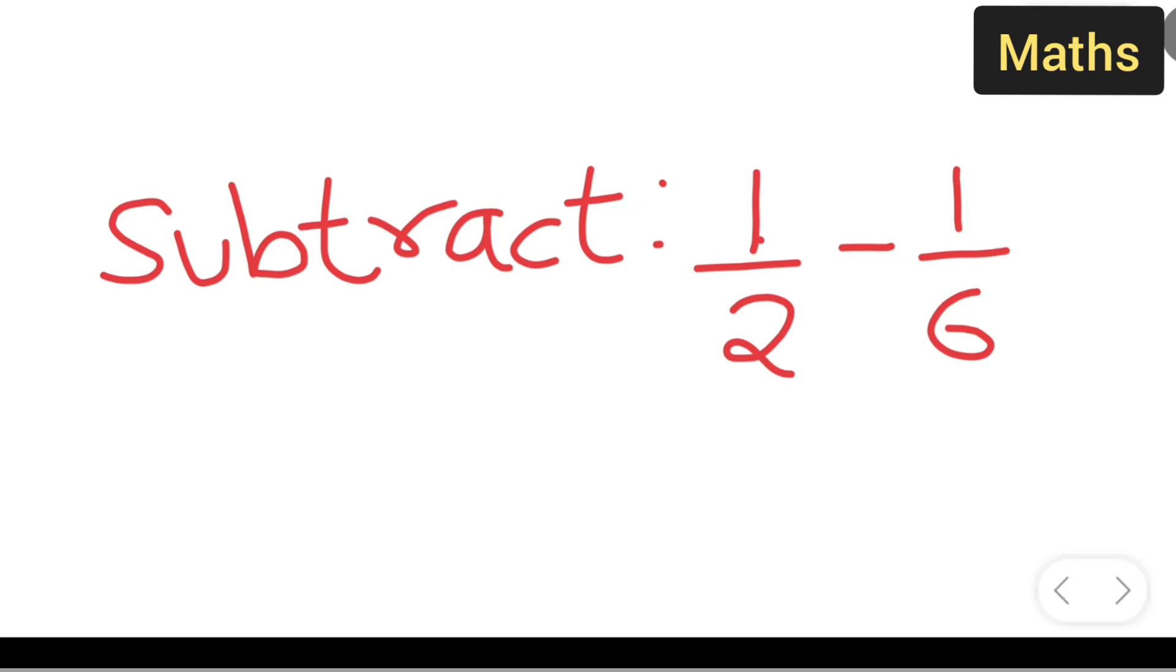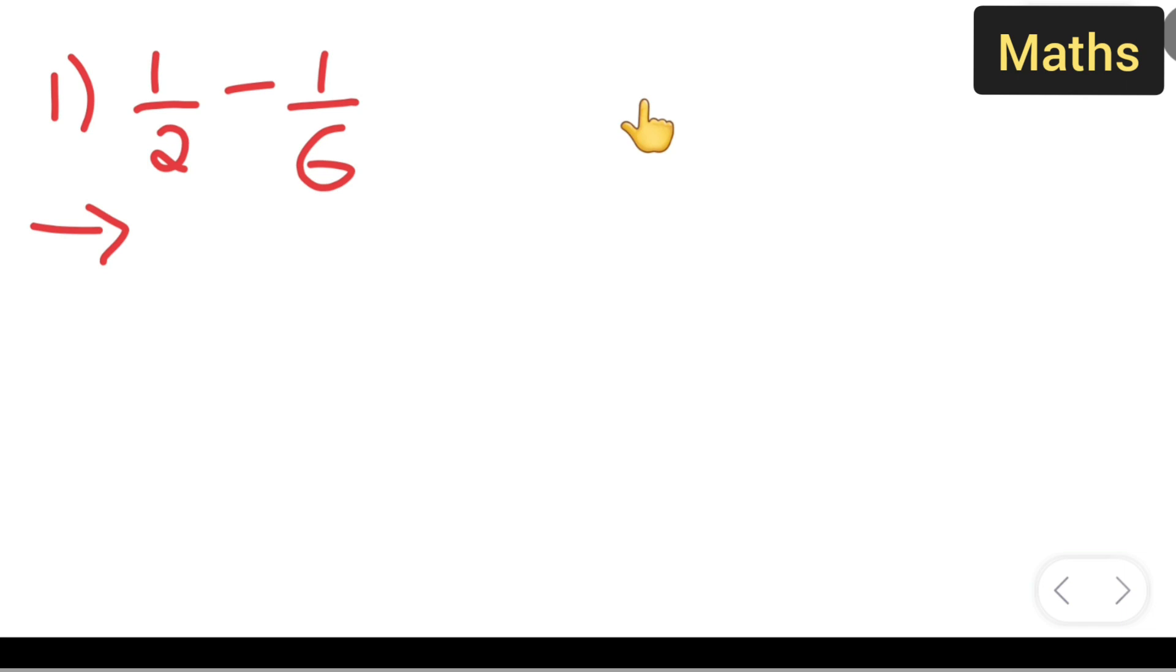Let us see. First, you all can take down the question 1 upon 2 minus 1 upon 6. Now here the denominators are different, they are not the same. So, since the denominators are different, they are not the same.